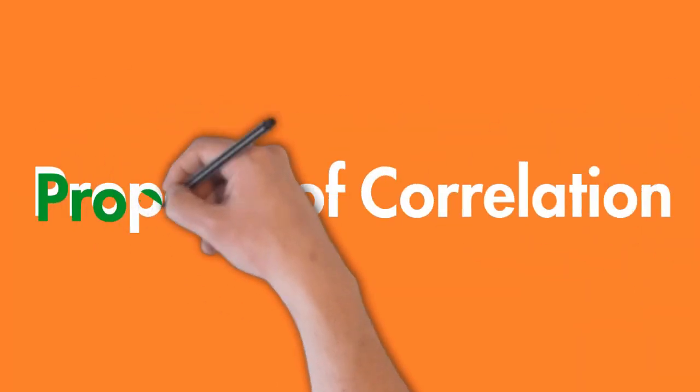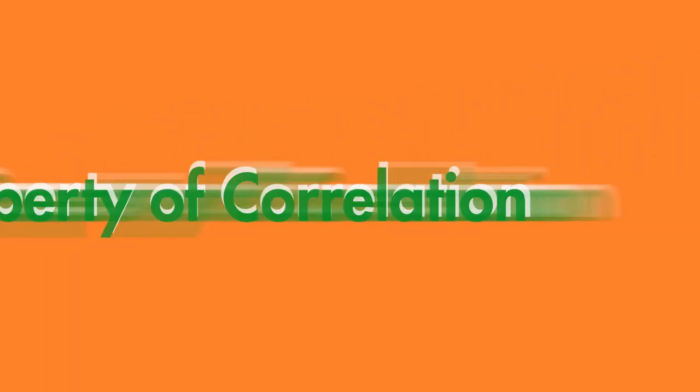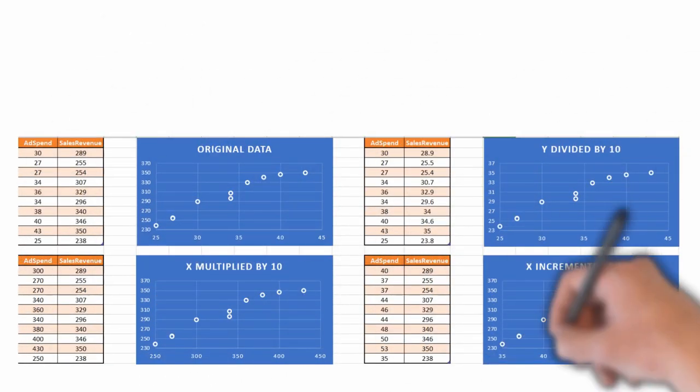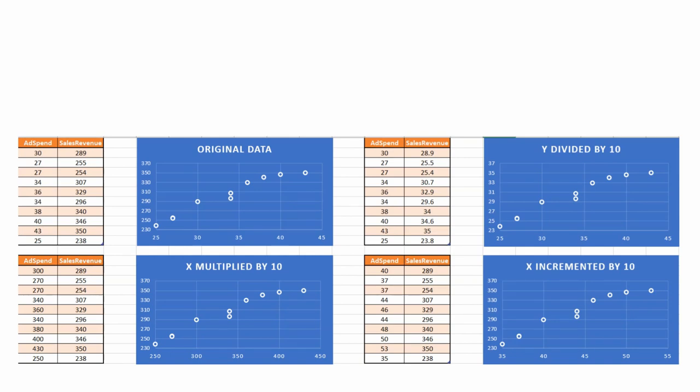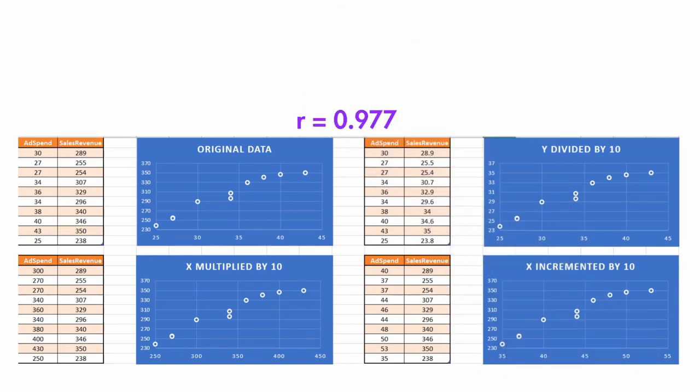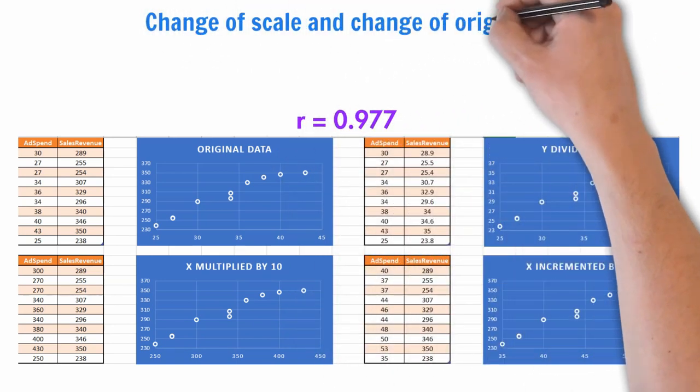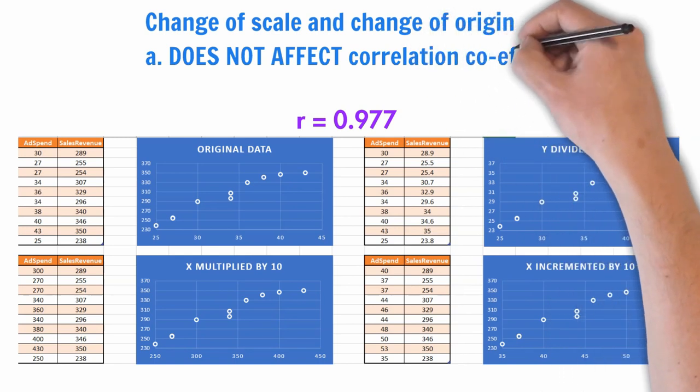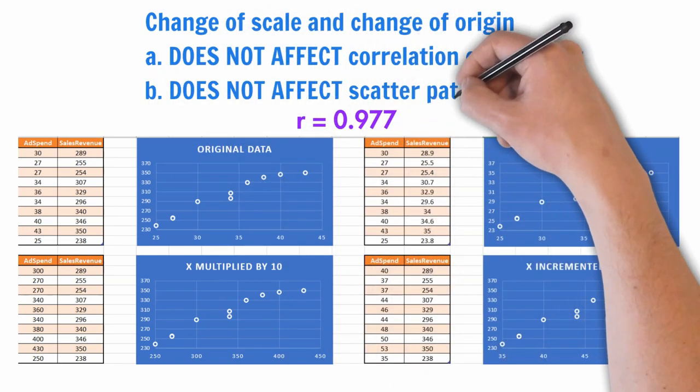Now that we have some clarity, let's learn some properties of correlation. For the first property, I have plotted four graphs using the same sample of data from our example on ad spend versus sales revenue. The first top left graph is the original data. The one below it is when the x variable was magnified 10 times. The one on top right depicts the graph when y values were scaled down 10 times. And finally, the one in the bottom right corner depicts the scatter when x values were incremented by 10. For all these scatter plots, we see the correlation coefficient is the same, that is 0.977. Therefore, we can safely surmise that any change of scale or origin on the data does not affect correlation coefficient. It also does not affect the scatter pattern of the data points.